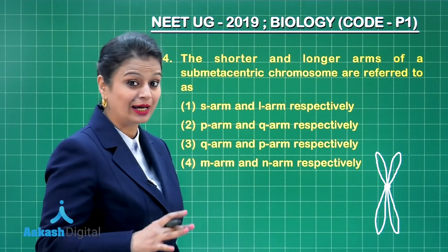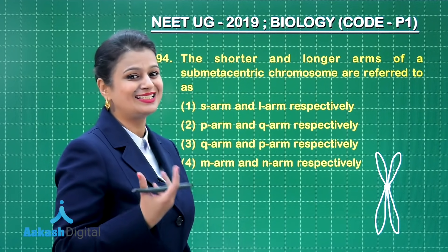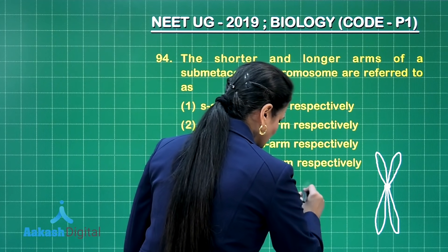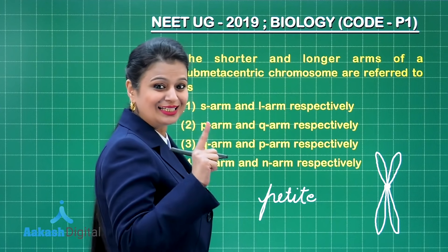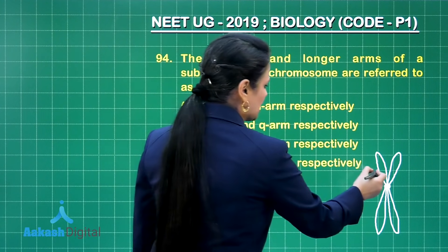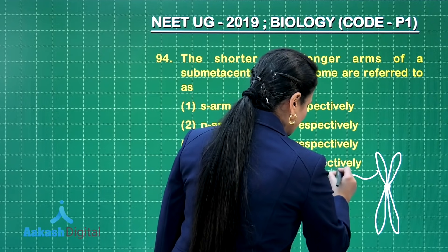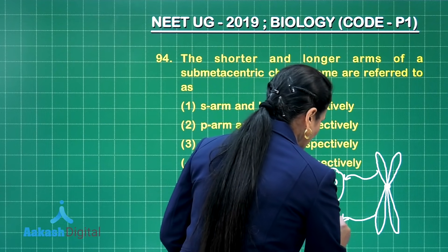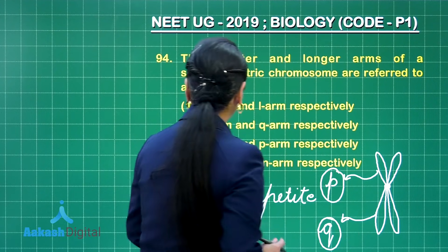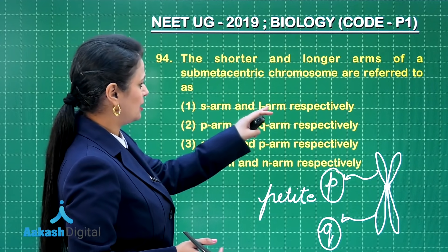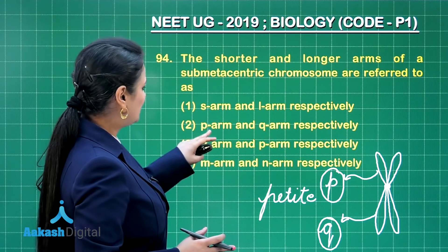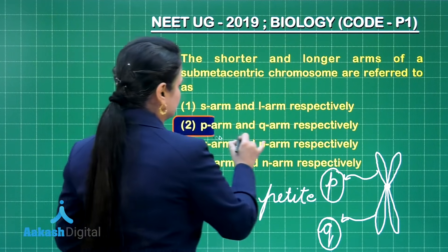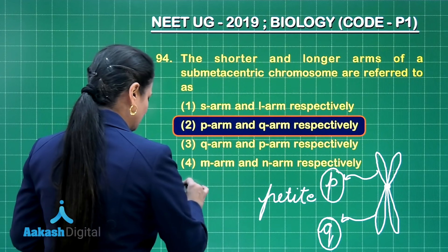What do you call these short and long arms? For the short arm, we use the word 'petite', which is why it is designated as P. The long arm is designated as Q. Looking at the options: S and L arm — that's wrong. P arm and Q arm respectively — that's right. The right answer is option number two.